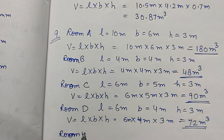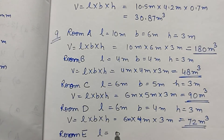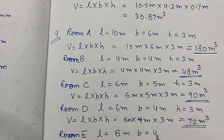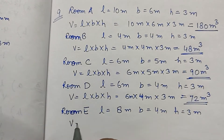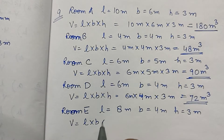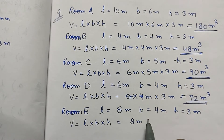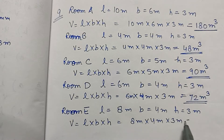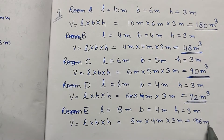Room E: length is 8 meters, breadth is 4 meters, and height is 3 meters. So volume is L into B into H — 8 meter into 4 meter into 3 meter, which equals 96 meter cube.